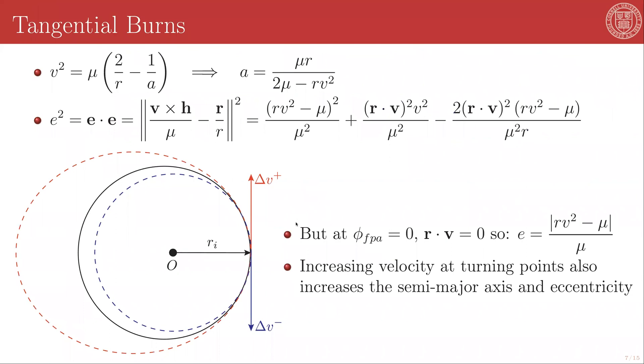Burns can be either tangential or non-tangential. A tangential burn happens at a flight path angle of zero. So if you are on a circular orbit, every burn is a tangential burn automatically. But if you are on an elliptical orbit or an open orbit, then the tangential burn can only happen at a turning point. You will recall that we've previously described the relationships between velocity and semi-major axis via the vis-viva relationship, and also given ourselves tools for evaluating the eccentricity. Based on this, we can say that at flight path angles of zero, any change in the velocity vector will automatically increase the eccentricity.